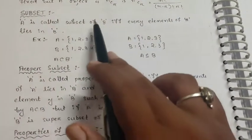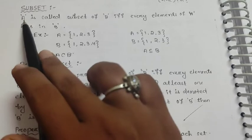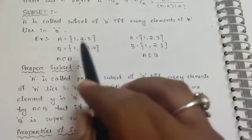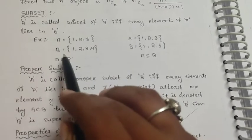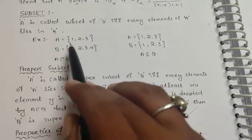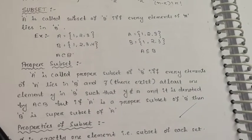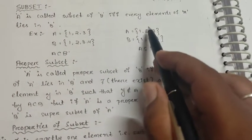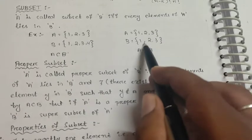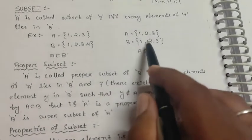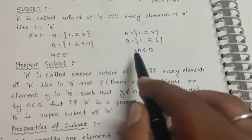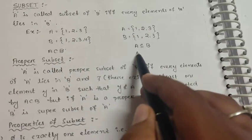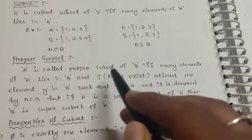What is a subset? A is called a subset of B if every element of A lies in B. For example, if A is equal to {1, 2, 3} and B is equal to {1, 2, 3}, then A equals B — that means they are equal sets.